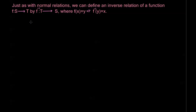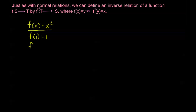Let's have an example. Let's say that my function f is defined by f of x equals x squared. Notice that in f, I have that f of 1 is equal to 1, and f of negative 1 is also equal to 1. Now, this is fine for f — I'm plugging in 1, I'm plugging in negative 1, it doesn't matter that I'm getting the same thing out. We know that that means it's not a one-to-one function, but f is still going to be a function.